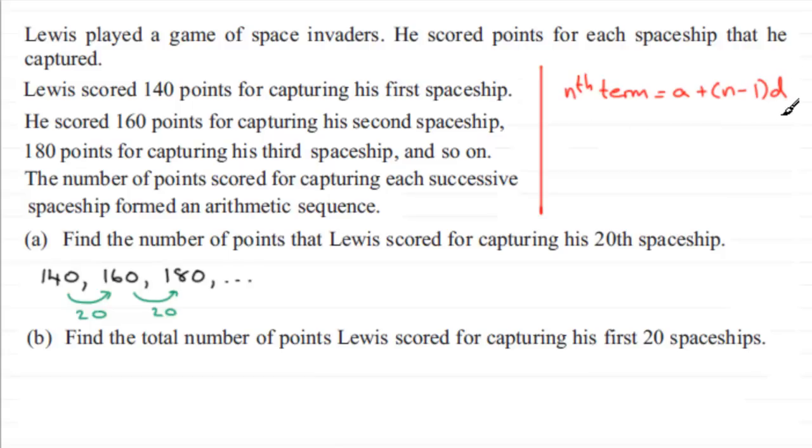So we're looking for the number of points he scored for the 20th spaceship—in other words, the 20th term. The 20th term is going to equal a, the first term 140, plus n minus one, where n is 20, so 20 minus one, and we multiply that by the common difference d.